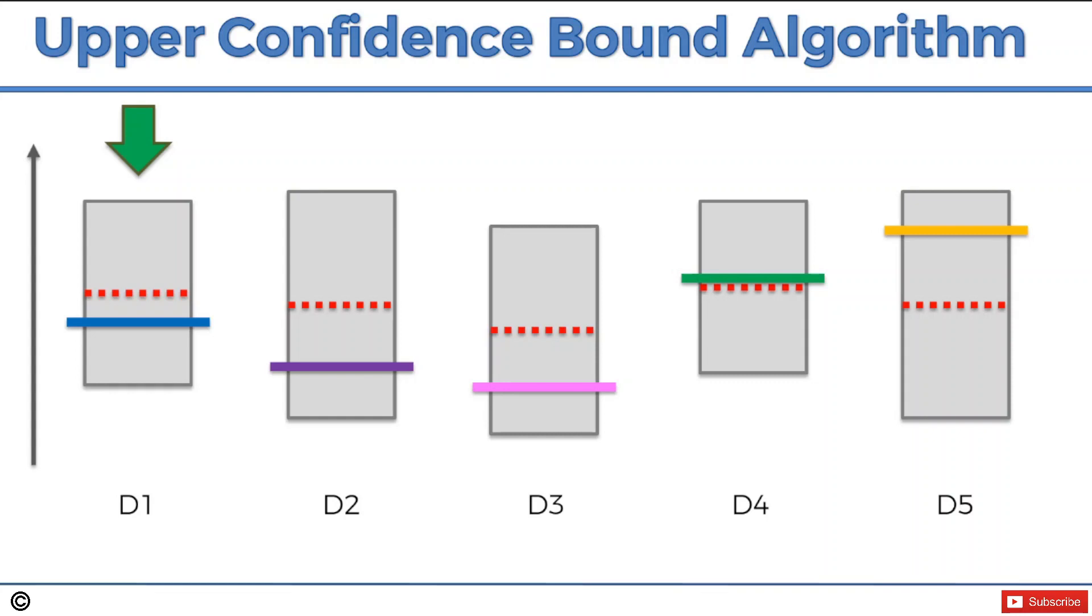Now we're going to pick the next one of the highest upper confidence bound. Then we do the trial. We do the round. What happens is the person clicks on the ad. Do we win money from the slot machine? It goes down, probably not. Didn't click on the ad, didn't win money from the slot machine. So the average of our observation goes down, comes closer to the expected value and the confidence bounds also decrease.